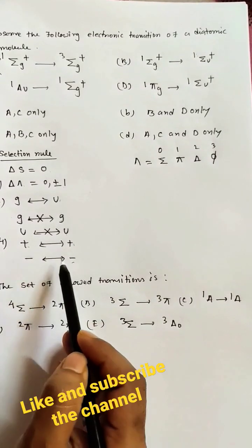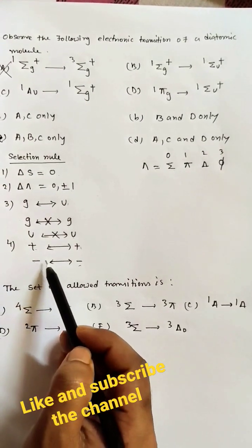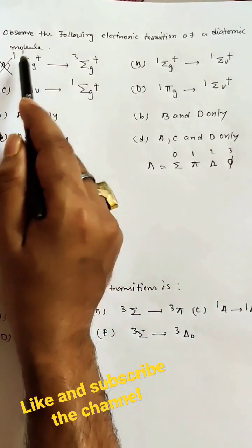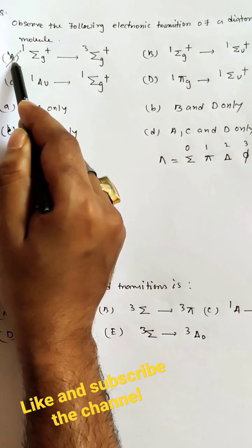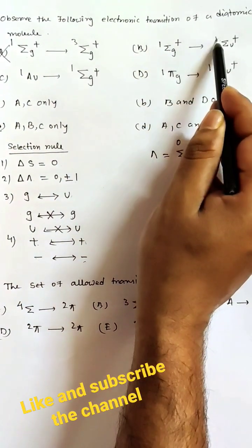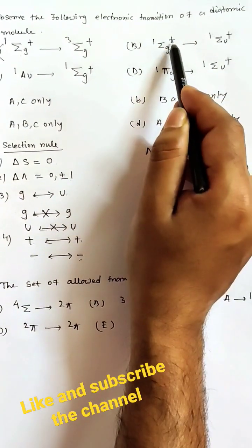Plus to plus and minus to minus are the allowed transitions. Since in the first question the spin multiplicity values are not equal, option A cannot be the answer.